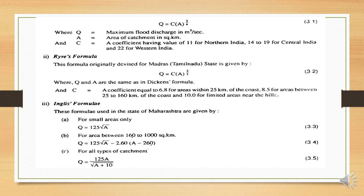If you refer to Nirali's book, the values are slightly different — for example, for Central India it is 13.92 to 19.9. So depending on which values you prefer, your answer will be slightly different.